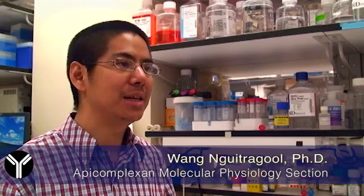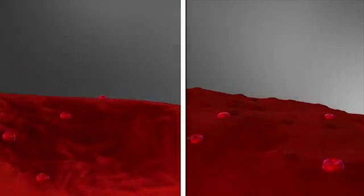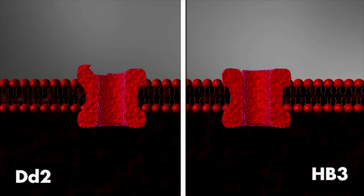We used the transmittance assay to screen two divergent parasite lines, Hb3 and DD2. Most inhibitors we found are equally effective against DD2 and Hb3 channels, suggesting that much of the protein is conserved.